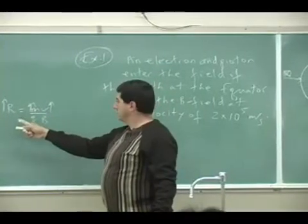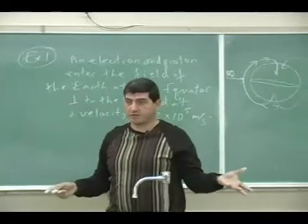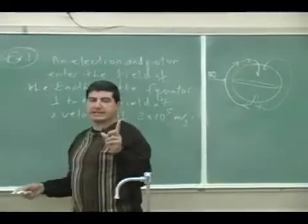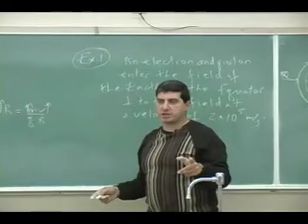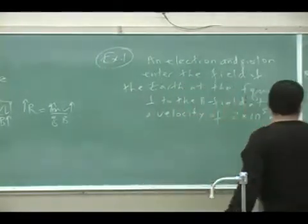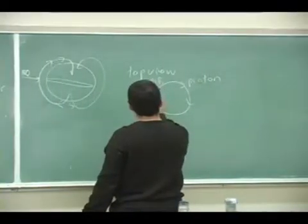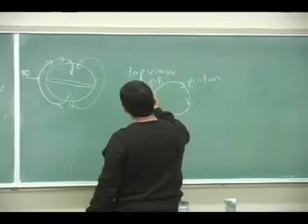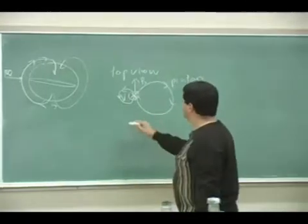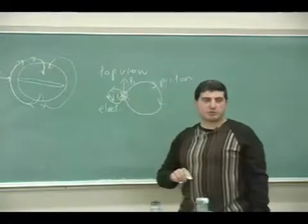Since they have the same V, the smaller the M, the smaller the radius. They have the same Q - the charge of the proton and electron are the same. The electron has a smaller M so will have the smaller radius. The electron has the smaller orbit.